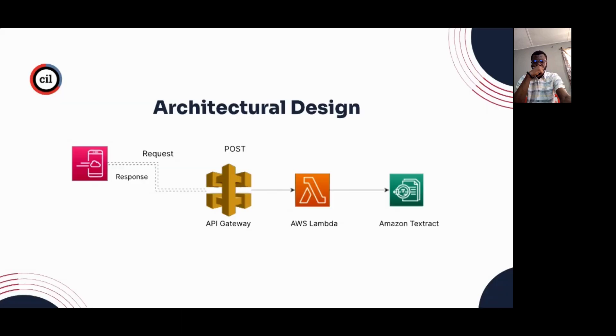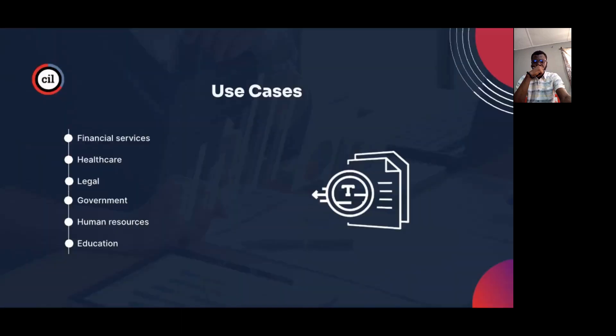Before the demo, let's talk about some use cases quickly. You can find Amazon Textract useful in banks and financial services — credit and loan facilities. In the healthcare sector, patient records and prescription sheets can be automated and sent into Amazon Textract to glean insights. You also have legal institutions and government institutions. Basically, wherever you work with documents, you can leverage Amazon Textract to process them seamlessly.